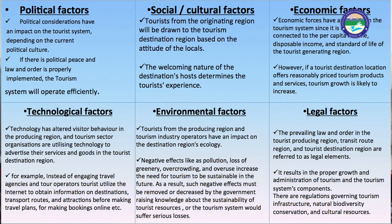Political factors: political considerations have an impact on the tourist system depending on the current political culture. If there is political peace and law and order properly implemented, the tourism system will operate efficiently. Social and cultural factors: tourists from the originating region will be drawn to the tourism destination region based on the attitude of the locals. The welcoming nature of the destination's host community determines the tourist experience.